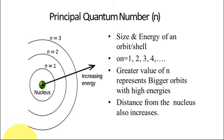On this slide, the principal quantum number is shown. The center of the atom is the nucleus, and the surrounding orbitals have values n equals 1, n equals 2, n equals 3, n equals 4, and so on. This gives the size and energy of an orbital or shell. These shells are also called K, L, M shells.